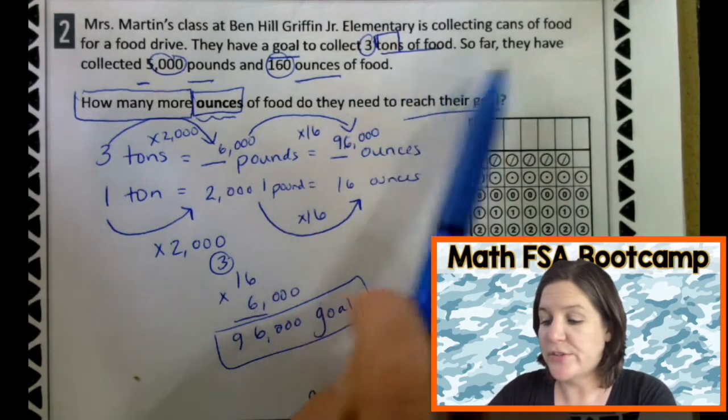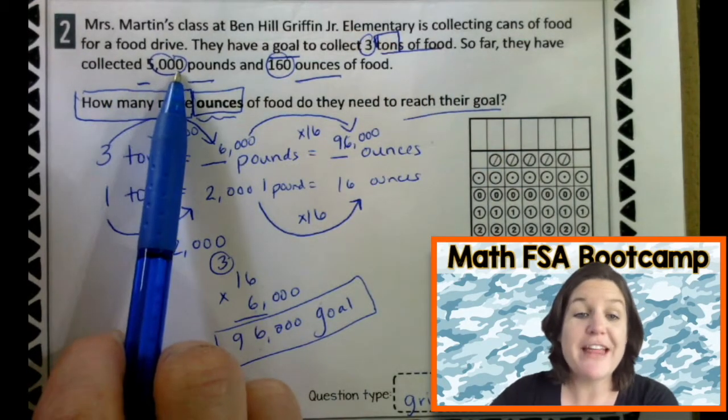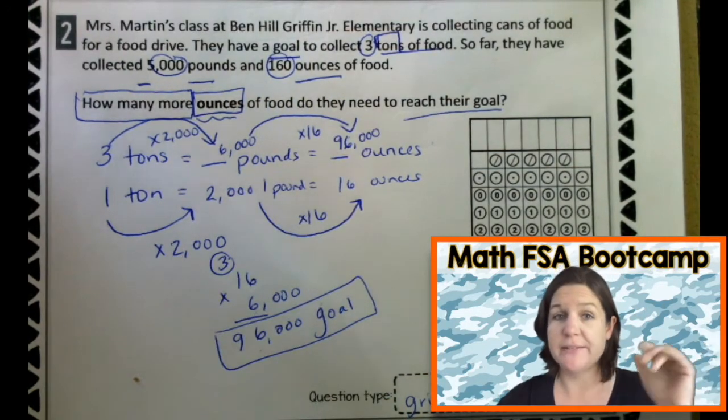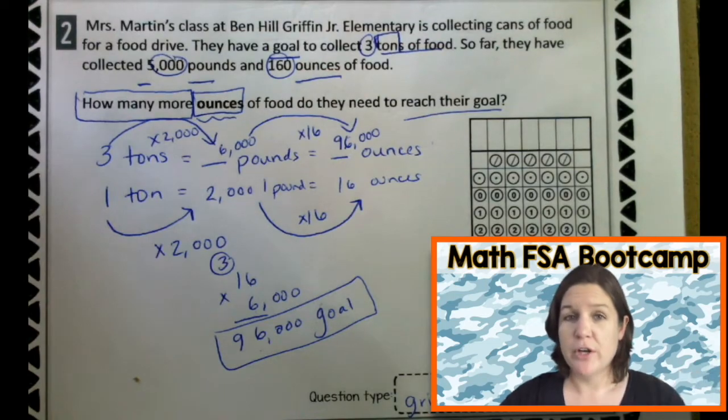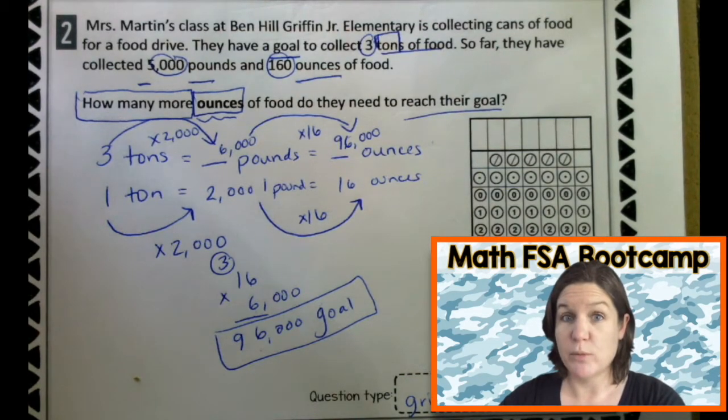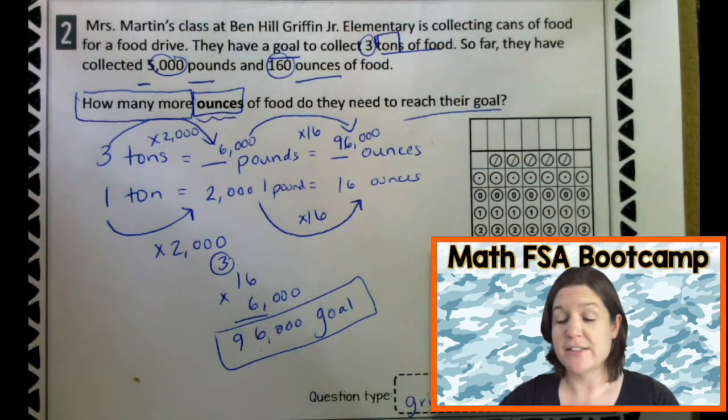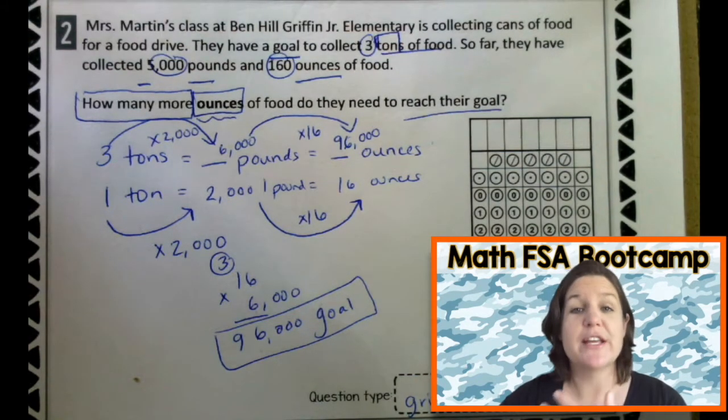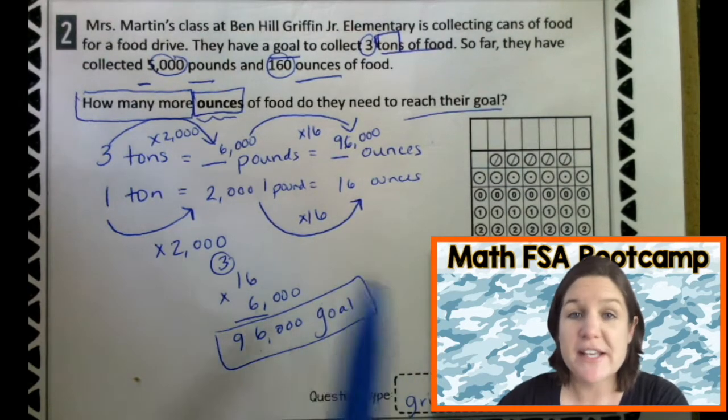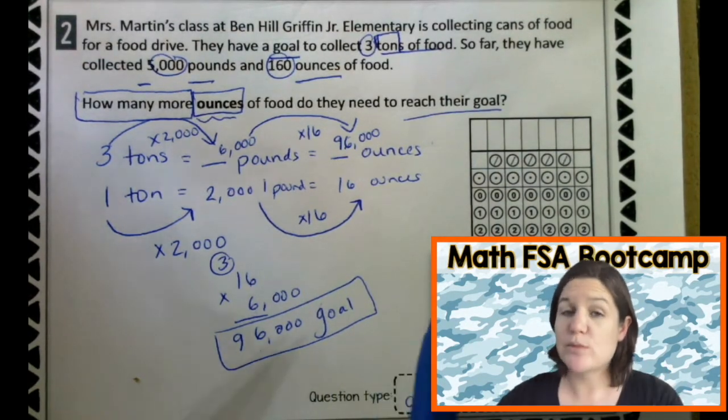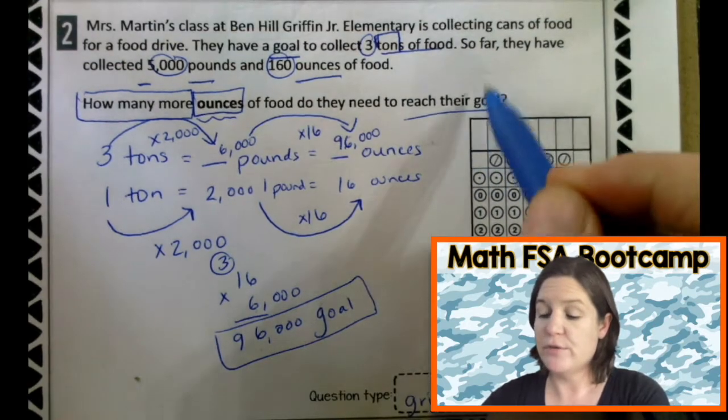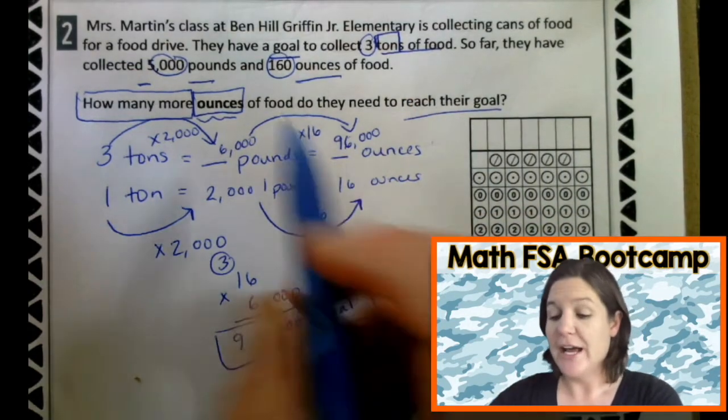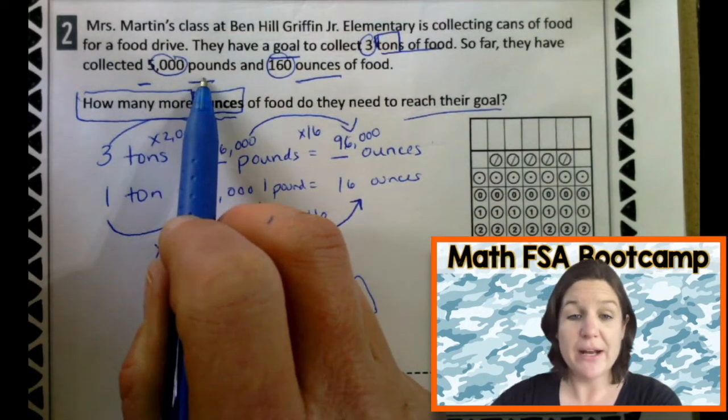What else do we know? We know that so far they have collected 5,000 pounds and 160 ounces of food. I'm going to stop for a second. If you are thinking to yourself, oh man, I really need some more help converting measurements. I promise you at the end of this, I'm going to send you in the direction to get some more help. Just stay tuned. Stay with me. For this one, I'm talking more just about the FSA style of questioning. So far they have 5,000 pounds and 160 ounces. Now, we need to convert these 5,000 pounds into ounces.